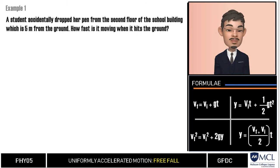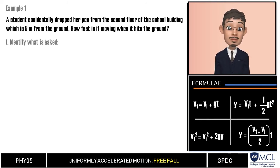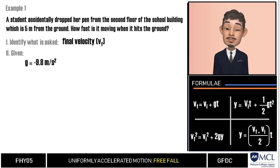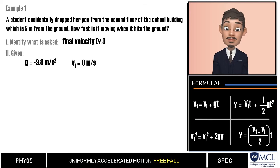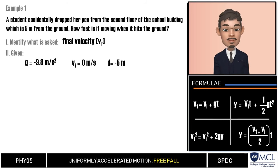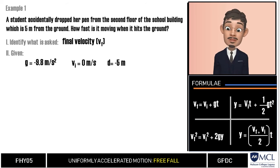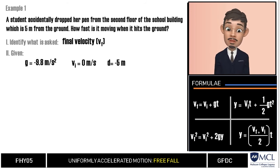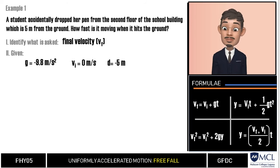In solving any problem, we always need to identify first what is asked. Here we are looking for the final velocity of the pen. The given in the problem are negative 9.8 meters per second squared — our constant acceleration — an initial velocity of zero because it was dropped, and a displacement of negative five meters. We use the negative convention to show direction; since the motion is from top to bottom, we use a negative sign.